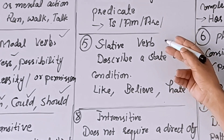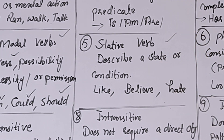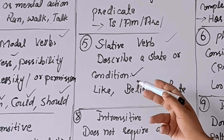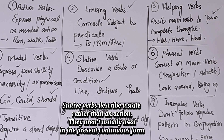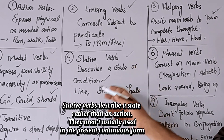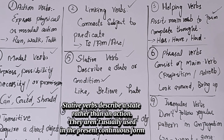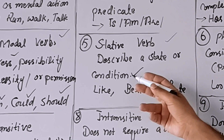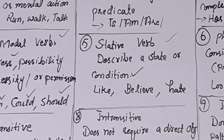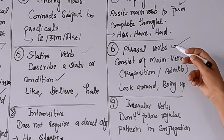The fifth type is stative verbs. A stative verb describes a state or condition — جب کوئی verb کسی بندے یا چیز کی state یا condition کو describe کرے تو وہ stative verb ہوتا ہے۔ Stative verbs normally ing form میں نہیں آتے — جیسے 'believe' سے 'believing' normally استعمال نہیں ہوتا۔